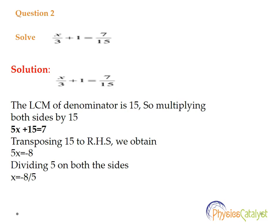So basically the takeaways from this chapter is that we have to transpose the numerical value from right-hand side to left-hand side or from left-hand side to right-hand side. And in case of numerator and denominator equations, we need to find the LCM and then multiply both sides by that number.